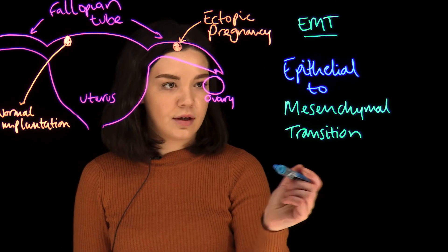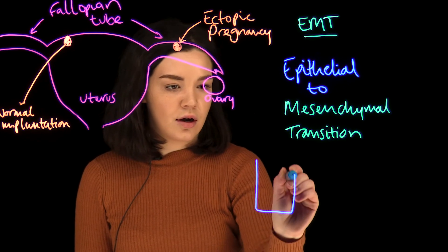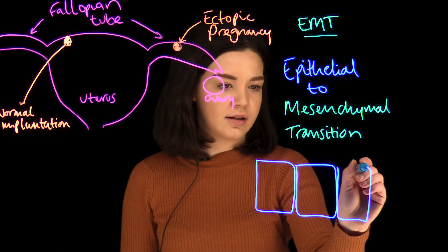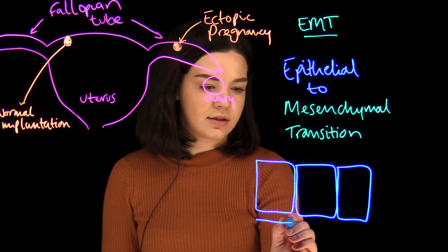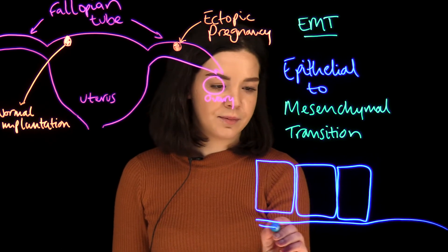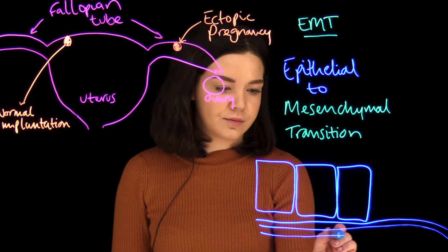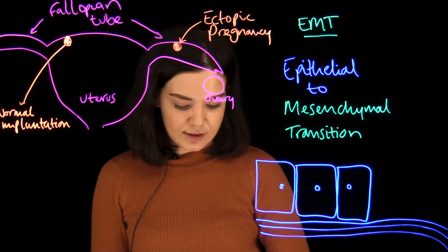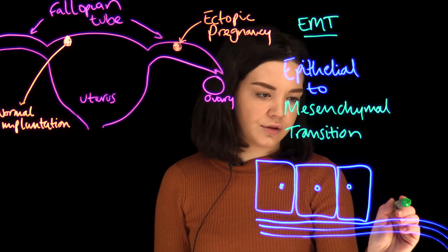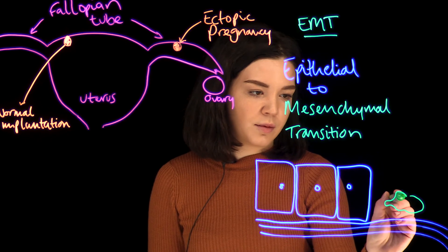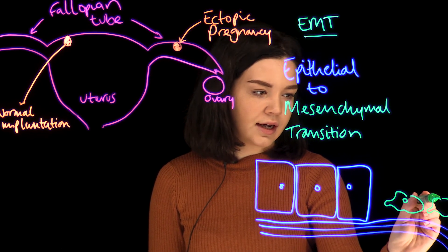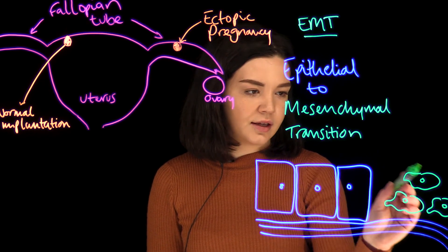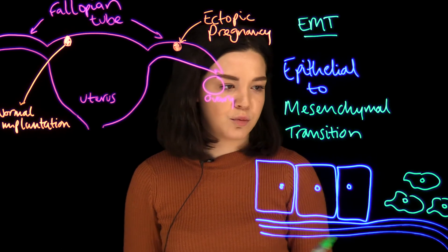Epithelial cells are simple cells and they line the surfaces in the body. They adhere to one another and are organized on top of a membrane called the basement membrane. During epithelial to mesenchymal transition, these cells detach from one another and detach from the basement membrane and become more loosely organized and lose their shape. These are mesenchymal cells, and they're more stem cell-like.